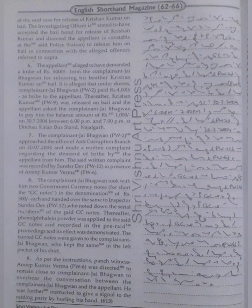The complainant Jai Bhagawan (PW2) approached the Office of Anti-Corruption Branch on 30th July 2004 and made a written complaint regarding the demand of bribe by the appellant from him. The said written complaint was recorded by Sundar Dev (PW12) in presence of Anup Kumar Verma (PW6).